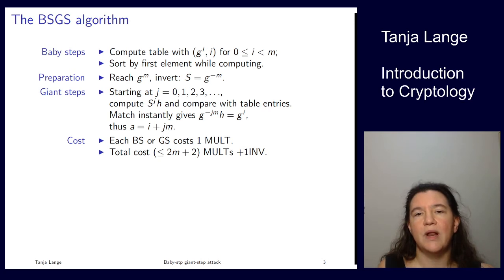In total, I have m steps, the baby steps, then one more exponentiation to the inversion, then the inversion, and then in the worst case, I have to run till m plus 1. So then I will find a match. Typically, I will only have to run through half the interval for the search. So then I have 1.5 times m plus a little bit. As soon as you get a match, as soon as you find a j so that g to the minus j m h is equal to the g to the i, then you know that a is i plus j m.